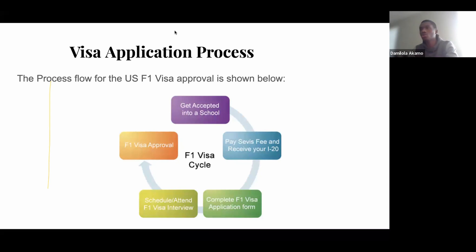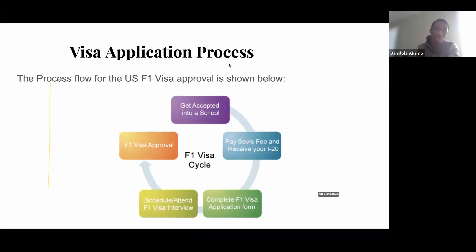The Form I-20 is actually what certifies you to come into the U.S. on an F-1 visa. When you get that from the university, the next step is to pay the SEVIS service fee. You first generate the Form I-901 service coupon using the information on your I-20 — specifically the SEVIS ID — then you pay the service fee. After payment, the next step is to go on for the visa application process, which involves filling in your information in Form DS-160.